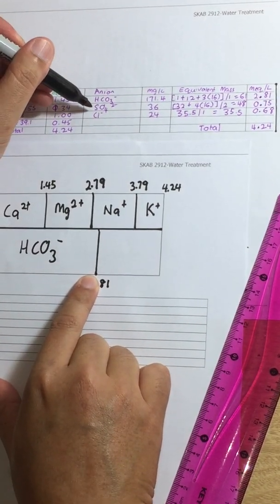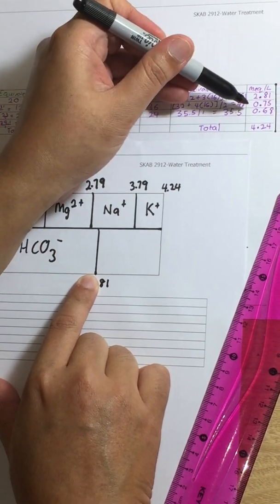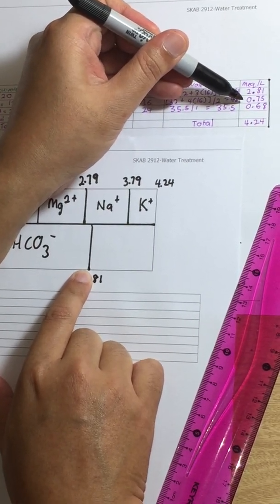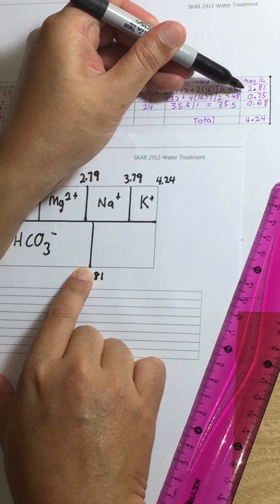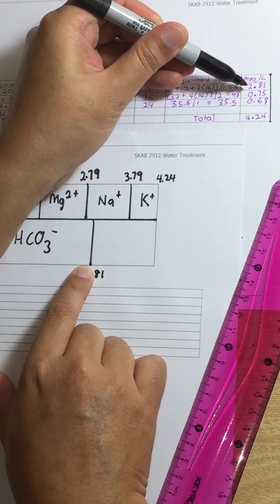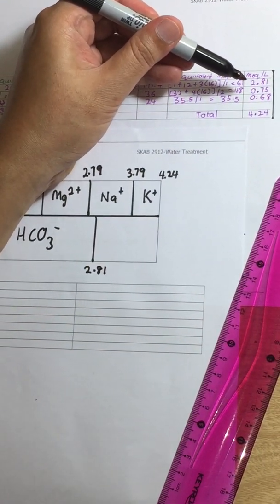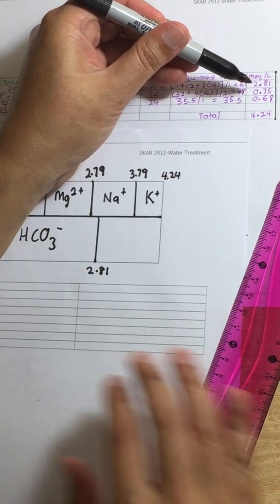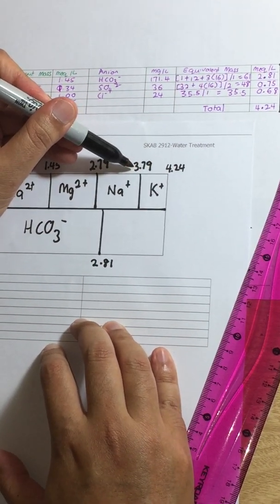And then we have sulfate. So 0.45, look at that number, plus 2.81. And that is 3.56. Okay. So this is 3.79.